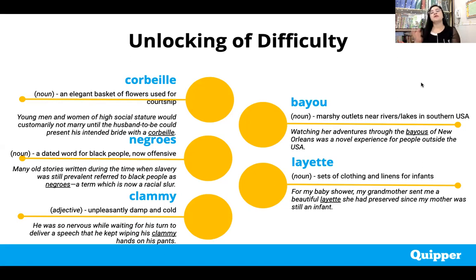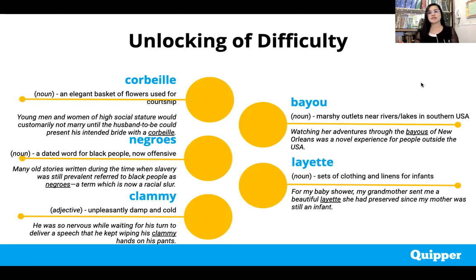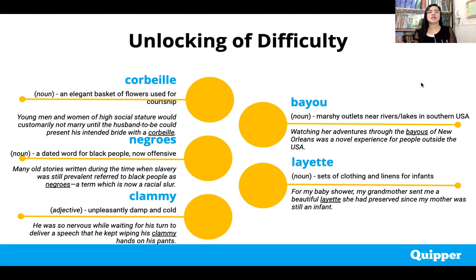'Negros' is a dated word for Black people. It is now considered offensive and discriminatory. In other parts of the world, it is considered a taboo — you can actually face legal consequences for using this word. Example sentence: many old stories written during the time when slavery was still profound referred to Black people using this term, which is now a racial slur.